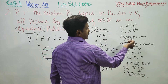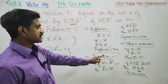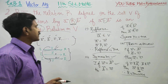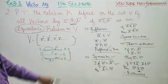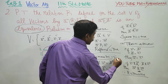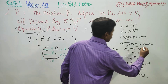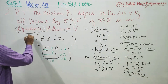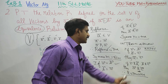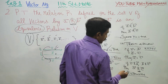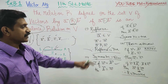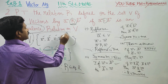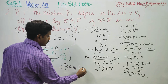R is symmetric, R is reflexive, and R is transitive. Since reflexive relation, symmetric relation, and transitive relation are all true, therefore R is an equivalence relation on the vector set V.